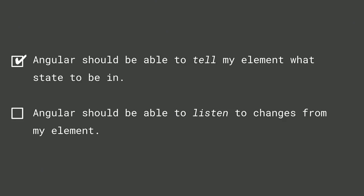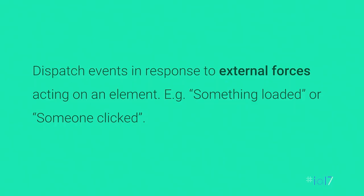Now Angular can set either an attribute or property and query the checked property to figure out the current state. The next thing is telling Angular when something in the control changes. I follow a rule: dispatch DOM events when things change only when there's some external force acting on the control — a user clicked, something loaded, a timer fired. I don't dispatch events just because someone set a property on me. My assumption is the developer knows they did that. It also avoids potential infinite loops in property-and-event-driven binding systems.